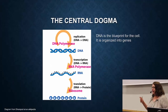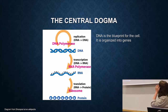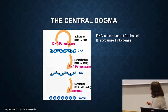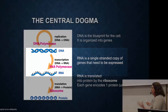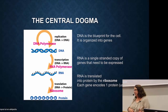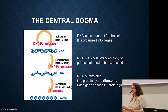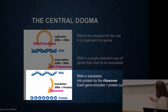DNA is the blueprint for the cell, organized into genes. Genes are transcribed into RNA — a single-stranded copy of the genes that need to be expressed. Your DNA in all your cells is identical, but in liver cells some genes are expressed for liver functions, and in your eyeball different genes are expressed. The DNA is all the same, but the RNA will differ. RNA then goes to the ribosome, which brings the instructions to make proteins.